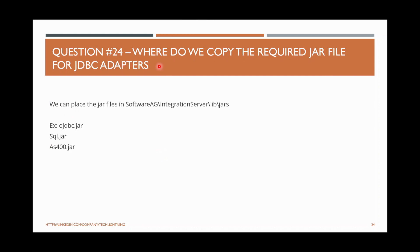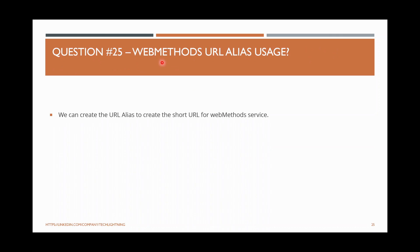Where do we copy the required JAR files for JDBC adapter? For JDBC adapter or any Java class file you want to call, you need the JAR file in the Integration Server. For any JAR file you want to place in a common location, put it under your installation path at integration server/lib/jars. Copy the file there and restart the instance. After that, you can use the JAR from Java programs or any other program to access those classes.